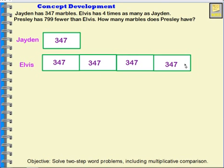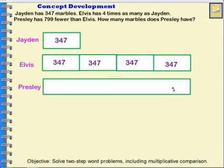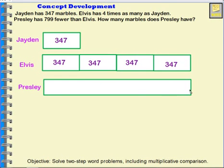Now let's talk about what Presley has. Presley has 799 fewer than Elvis. I'm going to start with this amount for Presley with a rectangle that's like the same size, but he has 799 fewer than Elvis, so I'm going to take some away. I'm going to put this over to show that I'm taking away 799. Whatever Presley has, it is this amount with 799 taken away from it.